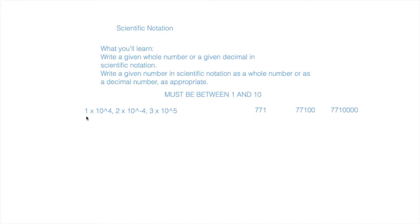The standard format for scientific notation is a number being multiplied by 10 to the power of something. This 10 will never change — whenever you see a scientific notation problem, it will always have a number multiplied by 10 to a certain power. For example, this one is 10 to the fourth, this one is 10 to the negative fourth, and this one is 10 to the fifth.